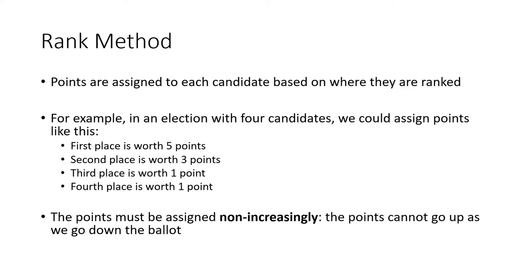Points are assigned based on where candidates are ranked — first place, second place, third place, and so on. One example of how we could do this is we could say first place ballots are worth five points, second place is worth three points, third place is worth one point, and fourth place is also worth one point. As long as we assign the points non-increasingly — in other words, as we go from first place to last place, these numbers can't go up. We don't want second place to be worth more than first place; that wouldn't make any sense.